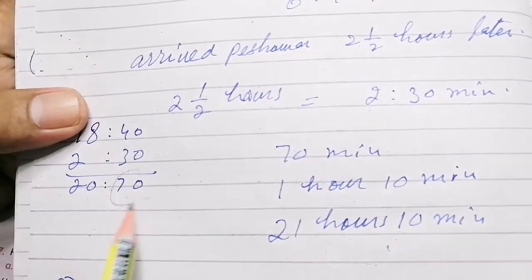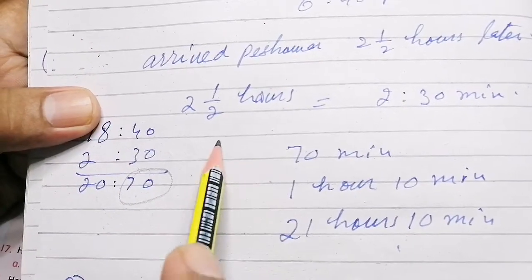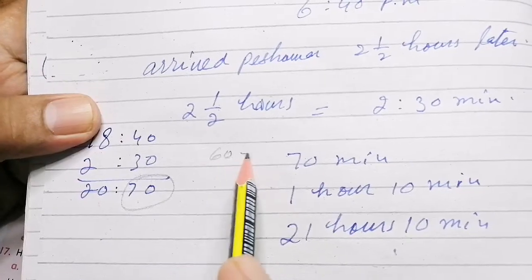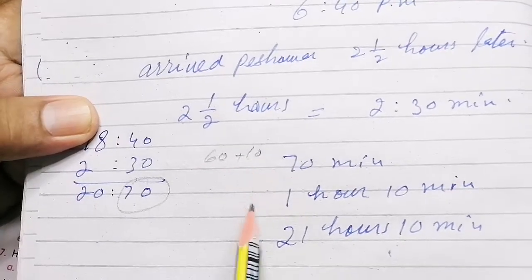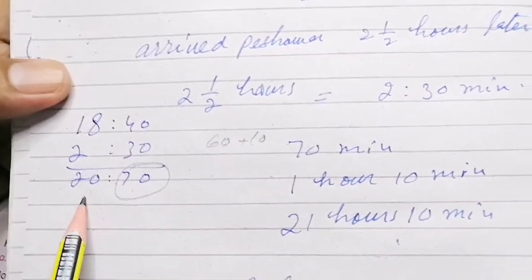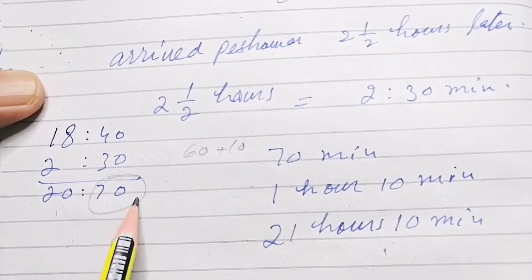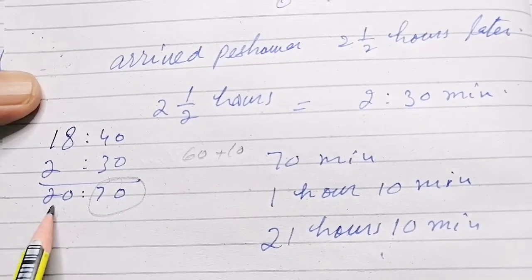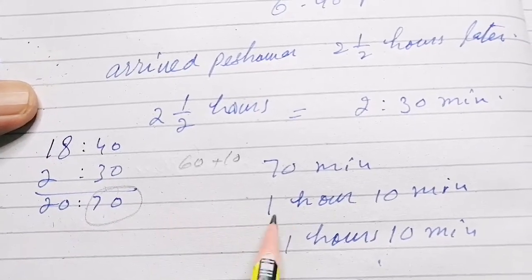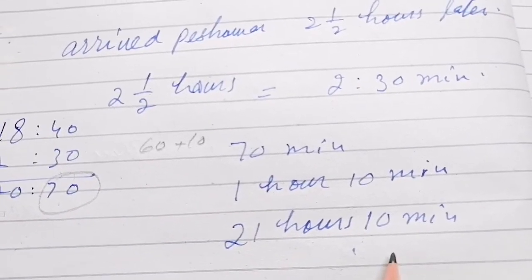Now we convert 20:70. We divide 70 minutes into 60 plus 10, so that is 1 hour and 10 minutes remaining. We add that 1 hour, making it 21 hours and 10 minutes. So the Airbus arrived at Peshawar at 2110 hours.